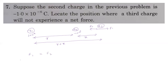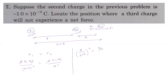Force balance condition: k·q1·q3 / (r+x)² = k·q2·q3 / x². Cancelling k and q3: x/(r+x) = √(q2/q1). Taking magnitudes of the charges (|q2| = 1×10⁻⁶, q1 = 2×10⁻⁶), and rearranging: (x+r)/x = √(q1/q2).